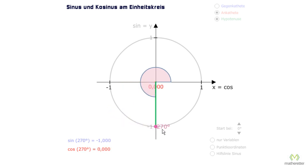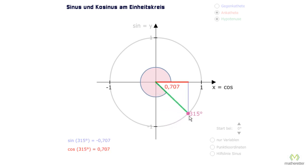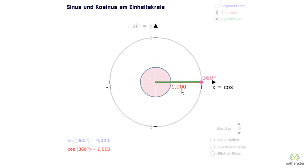At 270 degrees we look up and we hit the x-axis at 0. Let's choose 315 degrees; we hit the x-axis at around 0.707, which is positive because we are between 0 and 1. And if we now go to 360 degrees, we have a cosine value of 1. So here the unit circle is a very helpful tool as well.